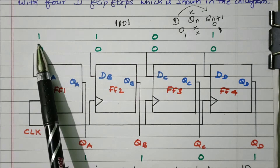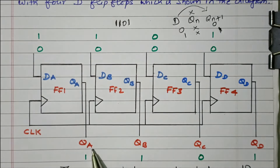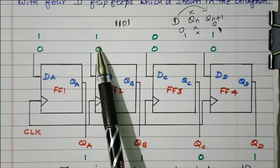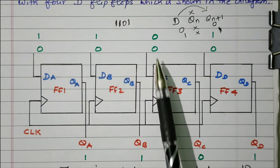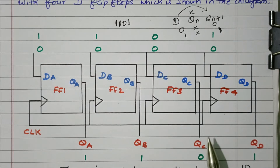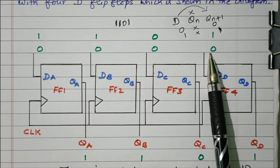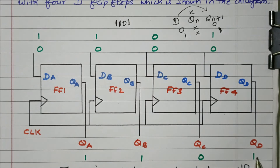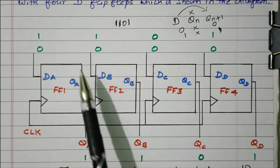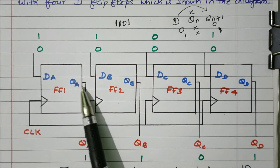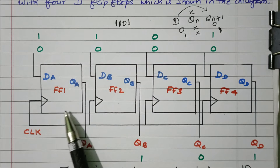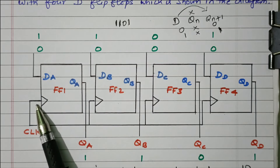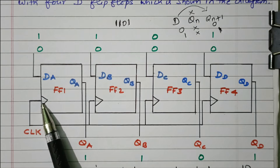QA will be 1 — DA=1 means QA is also 1. DB=1 means QB is also 1. DC=0 means QC is also 0. DD=1 means QD is also 1. So parallelly we are giving the data and parallelly we are taking the data, and that is done by the clock pulse. By using the clock pulse, we can make this device a time delay device.